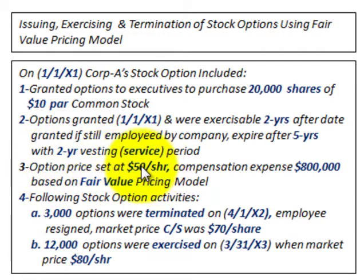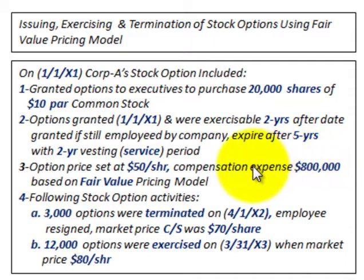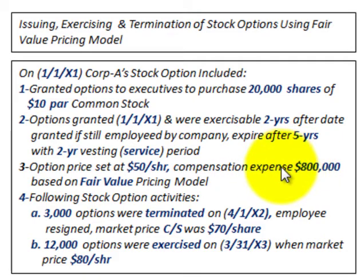The option price was set at $50 per share, and compensation expense was estimated to be $800,000 for these stock options. That's the expense the company would incur on these options — essentially what they'd be paying to the executives who purchased the stock.